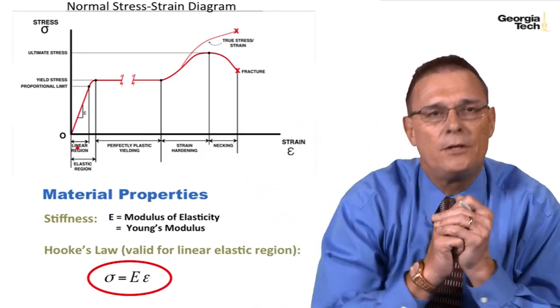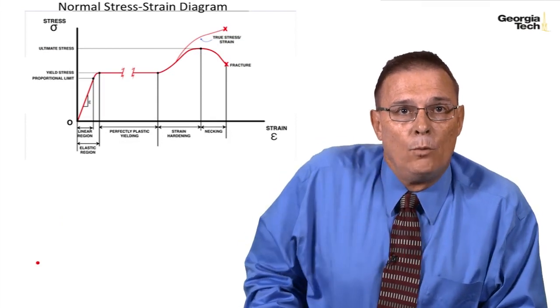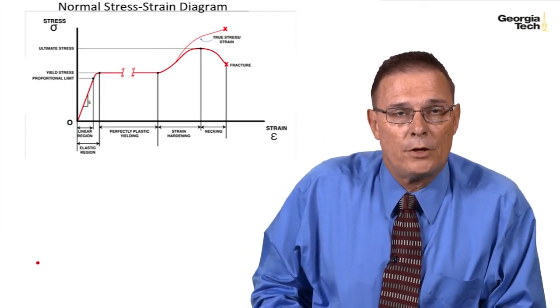And finally, maybe a really stiff material as an example would be a diamond. Let's look at some more material properties from the stress-strain diagram.